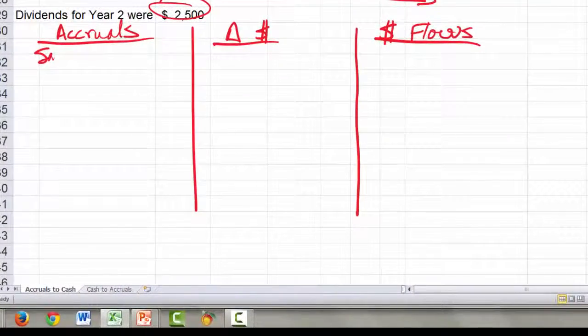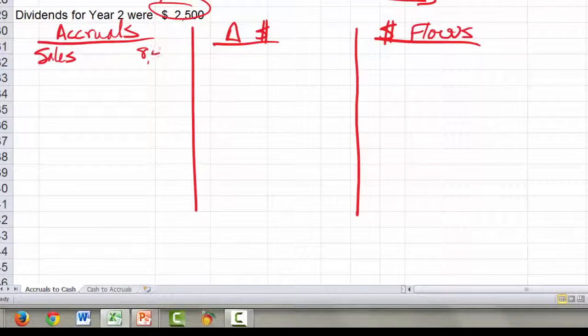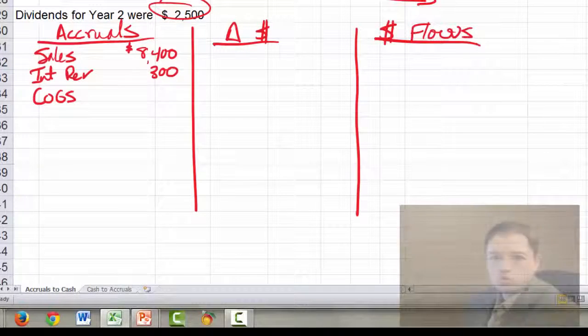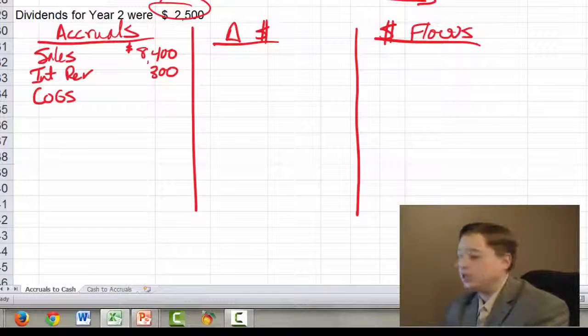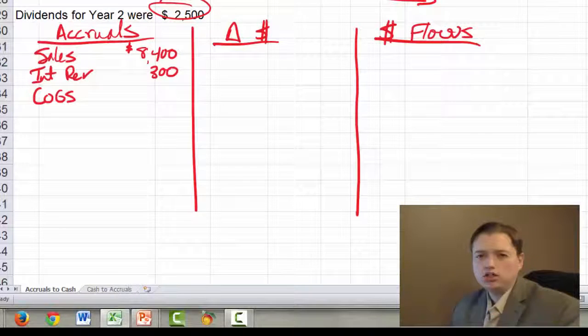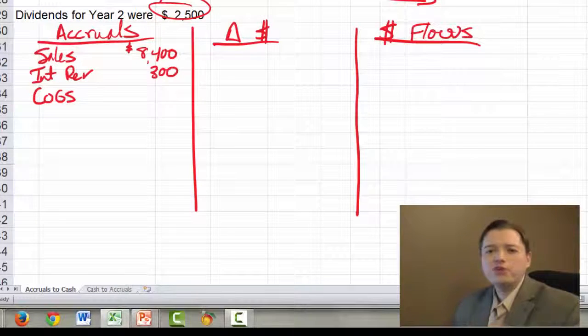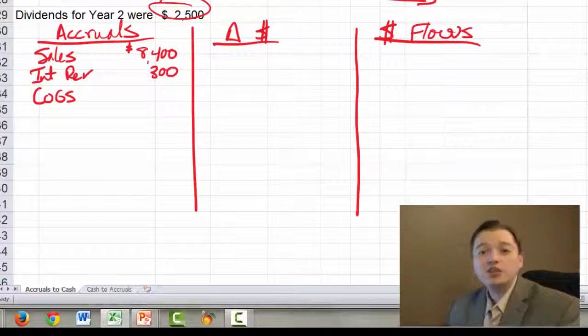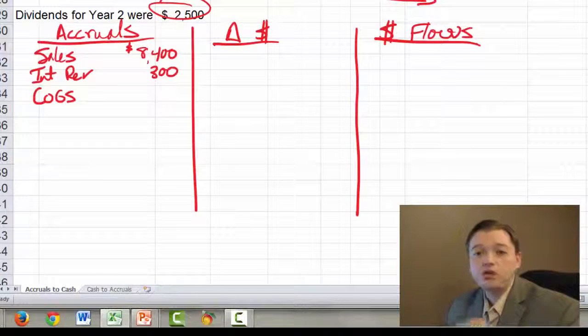Let me scroll back down here. We've got sales revenue and that's $8,400. We've got interest revenue, $300. We've got cost of goods sold and I'm going to stop right here and mention one thing we haven't talked about yet with the worksheet. In order for the worksheet to be effective, you have to put in the information as either positive or negative.